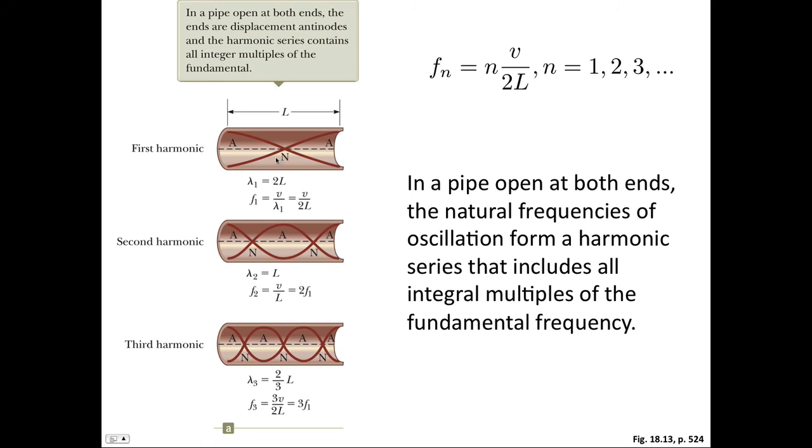For a pipe open at both ends, the first harmonic occurs when we have half a wavelength. The shortest distance between two antinodes is half a wavelength. So in that case, the wavelength is equal to two times the length of the pipe. And the frequency of the fundamental in this case, or the first harmonic, is v over 2L.